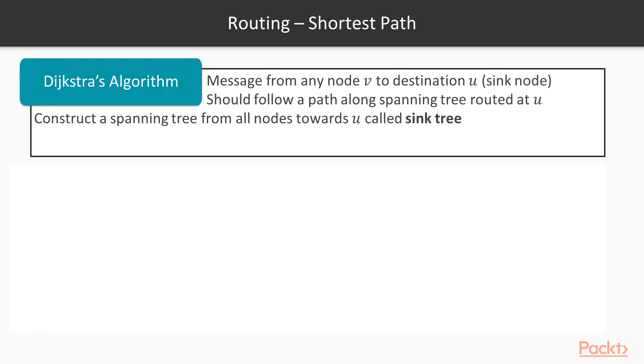Message from any node v to destination node u, also known as sink node or the root node, should follow a path along a spanning tree rooted at the sink node. This will allow us to construct a spanning tree from all the nodes towards the sink node, which will eventually make a sink tree.